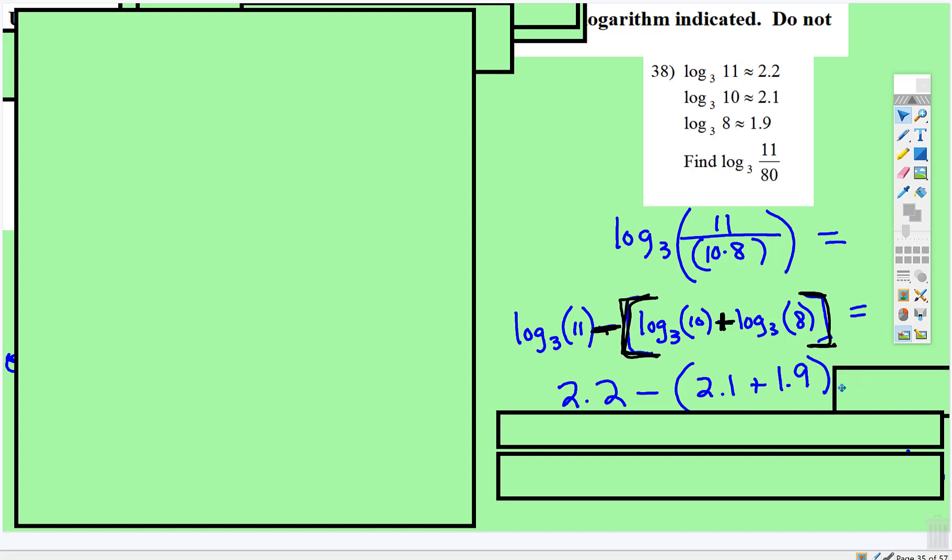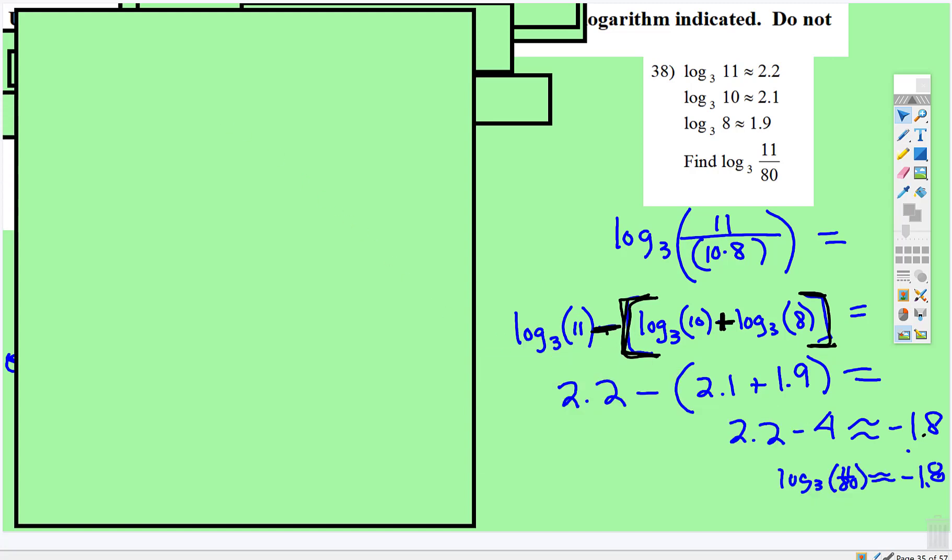Well, 2.1 plus 1.9 is 4. So 2.2 subtract 4 is about negative 1.8. So then we rewrite the original: log base 3 of 11/80 is about negative 1.8. And that's it for this one.